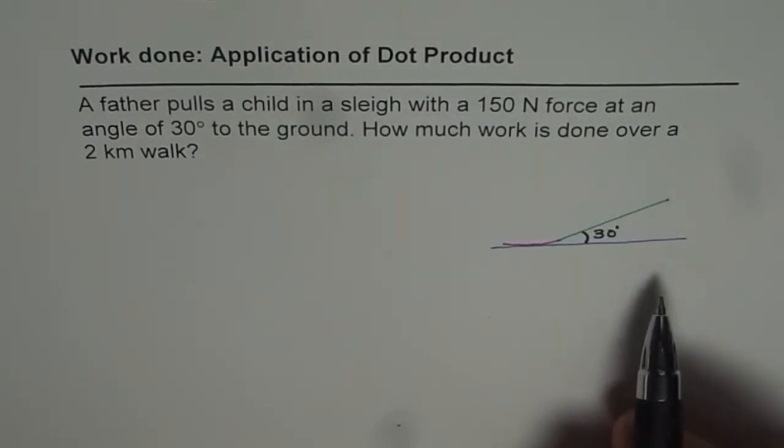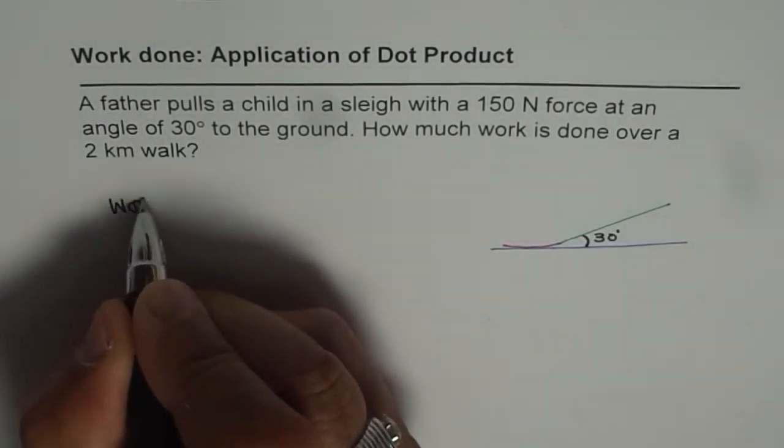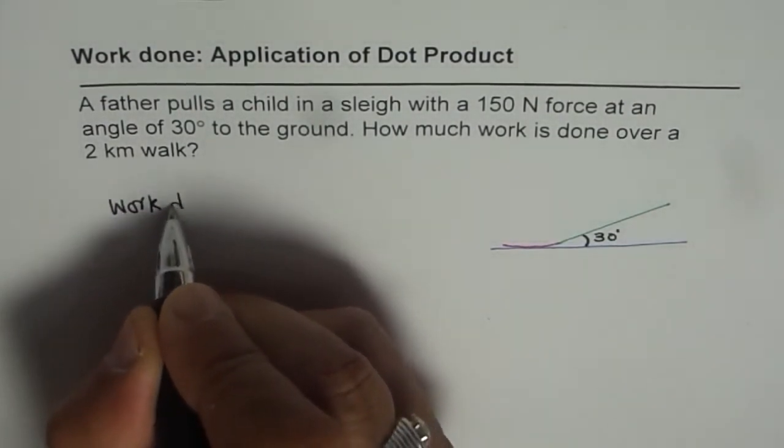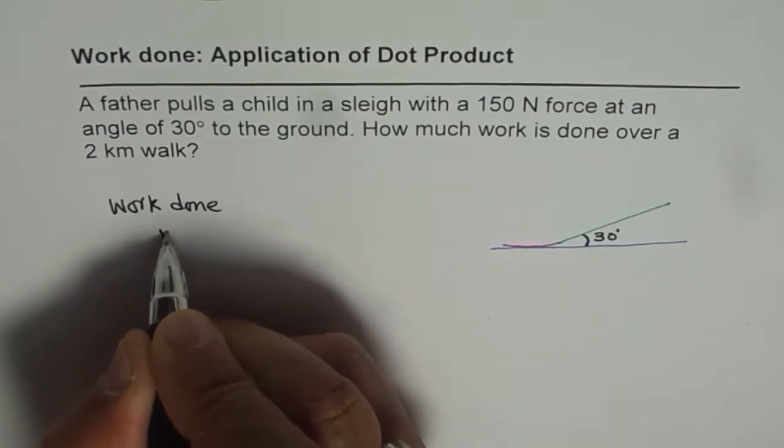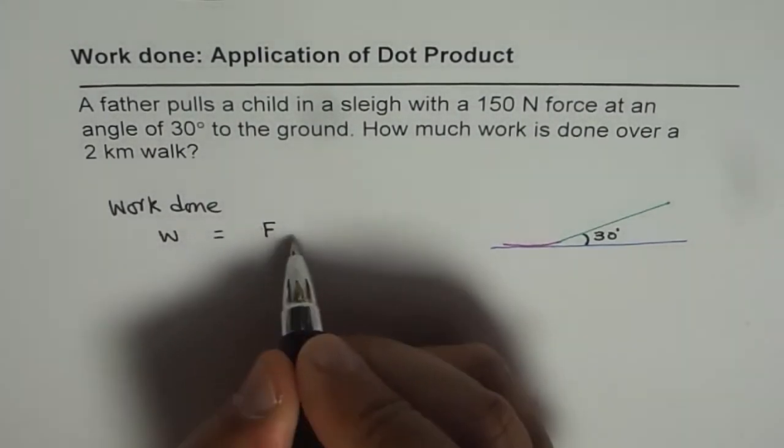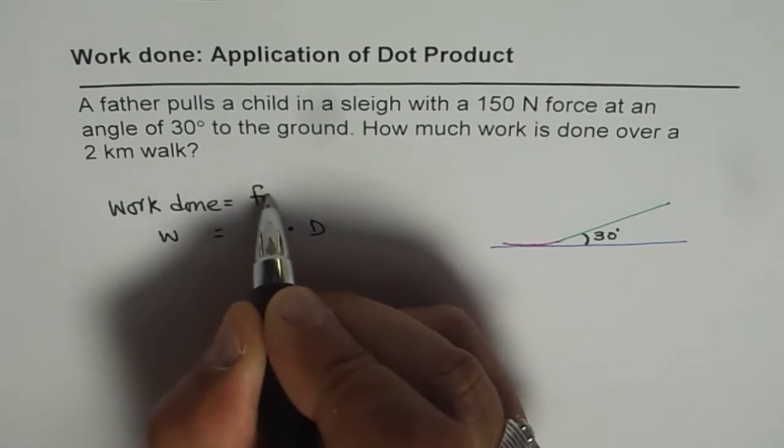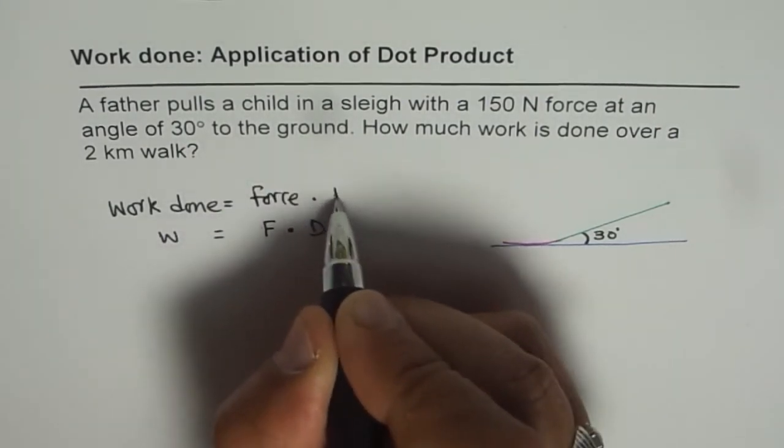And that is the reason why when we do work done, we have the formula as work done W equals force dot distance D. So we say work done equals force dot distance.